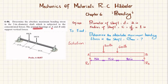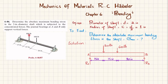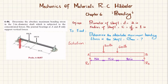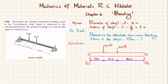The journal bearings at A and B only support vertical forces. You can see this is the shaft having concentrated loads of 800 pounds and 600 pounds. At A and B we have journal bearings which exert only vertical reactions. You have to find the absolute maximum bending stress.